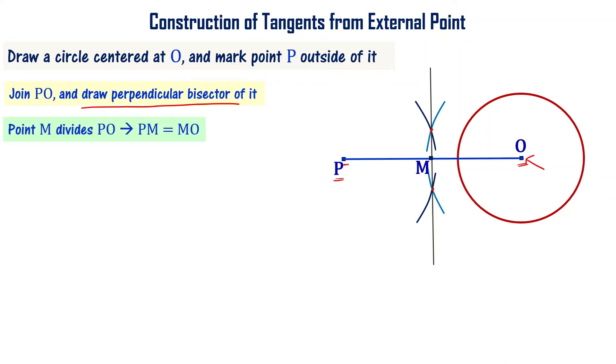Point M divides PO into two equal parts, so PM is equal to MO.